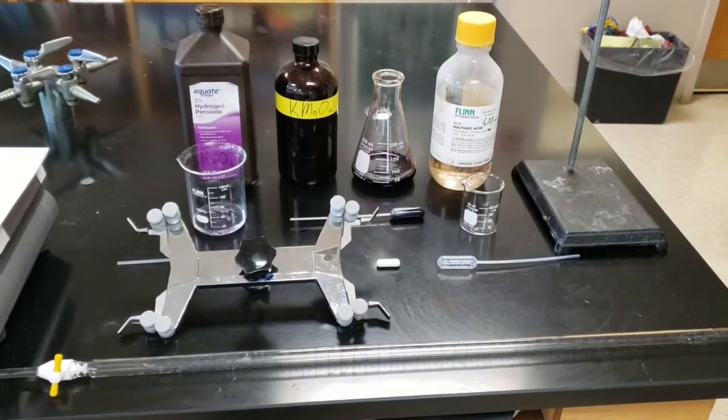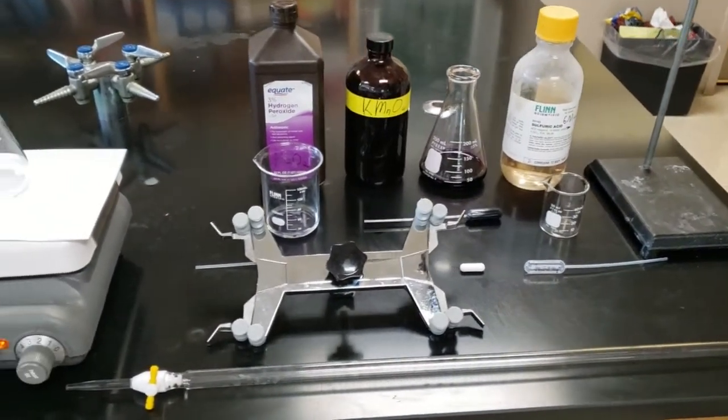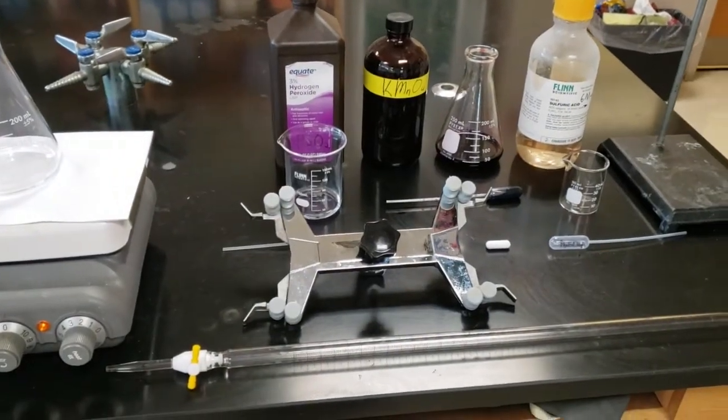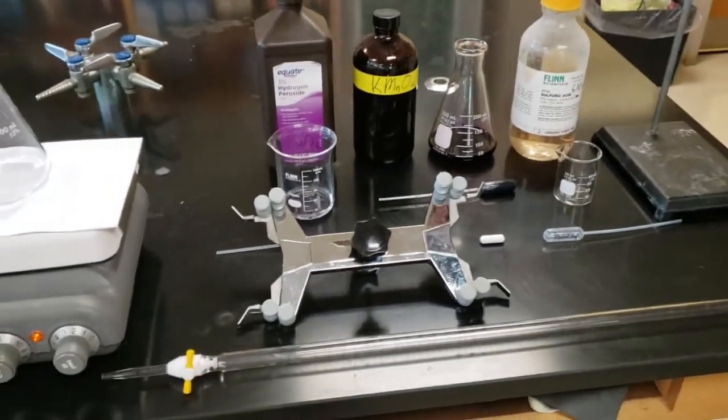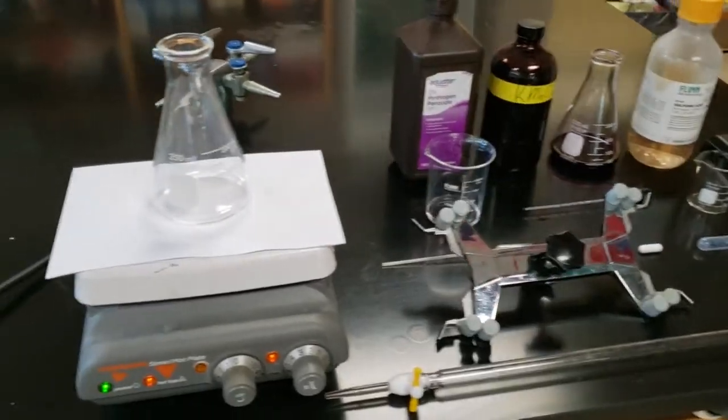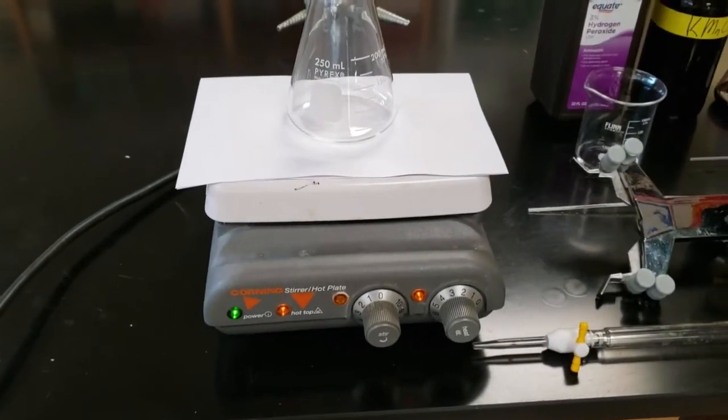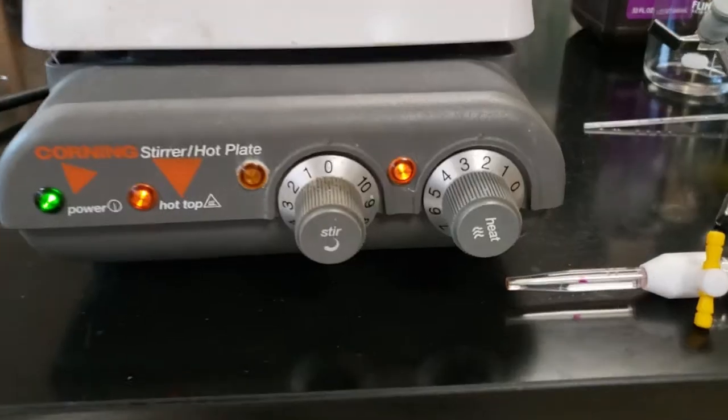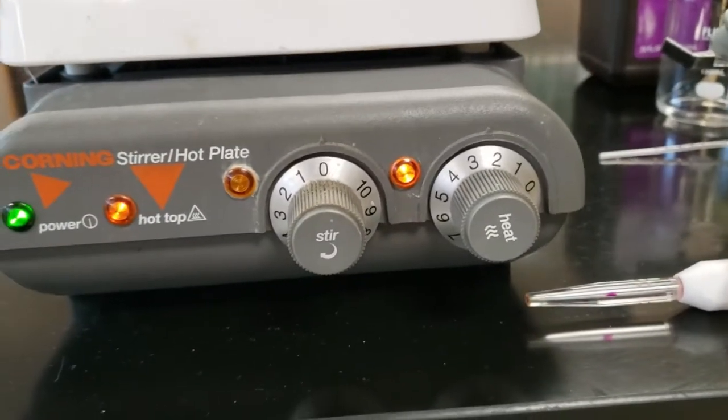We have the two chemicals there plus the sulfuric acid, which is 6 molar. You have a burette clamp, a 50 milliliter burette. Here we have a hot plate with a stir bar. The stir will make it stir and the heat will make it heat, so we're going to only turn it up a little bit to get it warm.